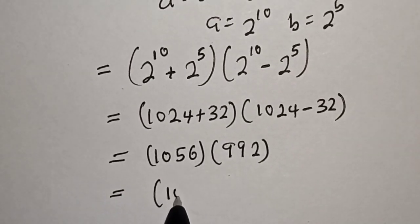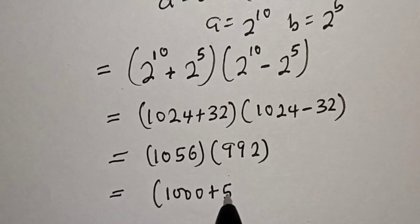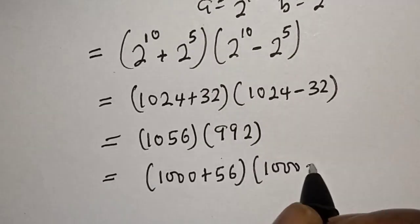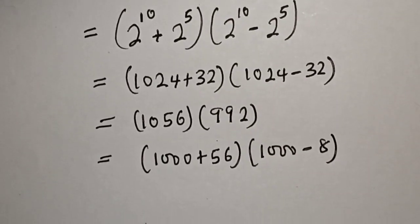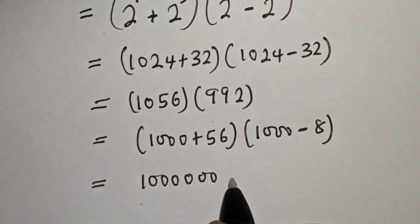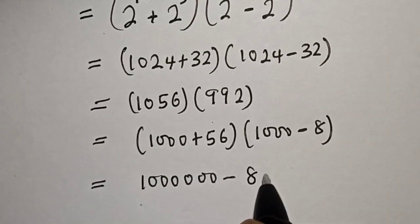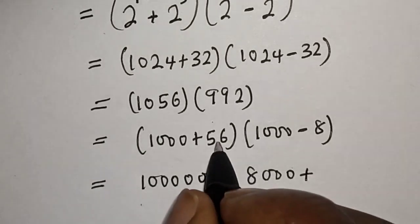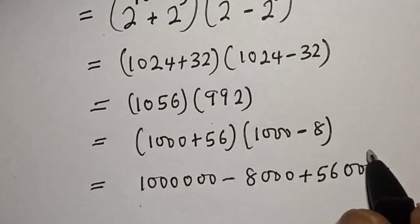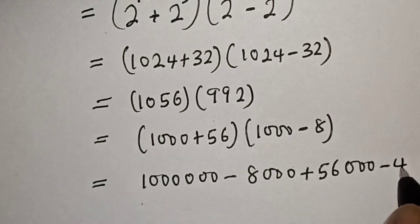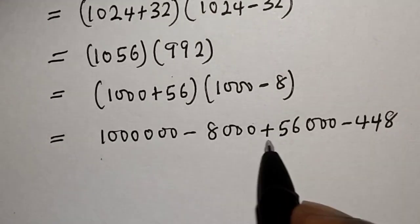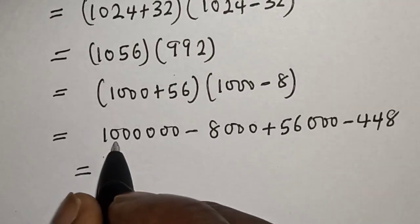1056 can be written as 1000 plus 50 plus 6, multiplied by 992, which is 1000 minus 8. Let's multiply out: 1000 times 1000 is 1 million, minus 1000 times 8 is 8000, plus 56 times 1000 is 56000, minus 56 times 8 is 448.